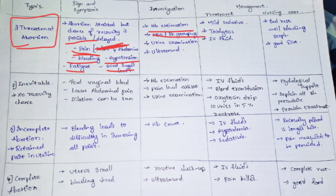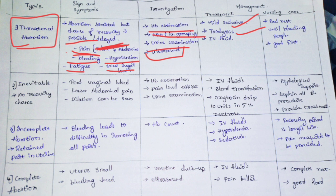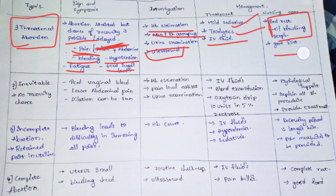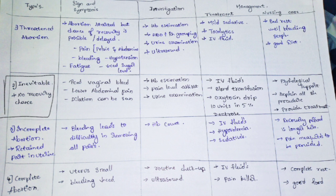Investigation for threatened abortion: check HB estimation and blood group (in case blood transfusion is needed), urine analysis, and ultrasound. Treatment: mild sedative and tocolytic drug are provided, IV fluid to prevent dehydration, and the main treatment is bed rest — generally recommended for one to ten days until bleeding stops. Good diet helps regain the loss.